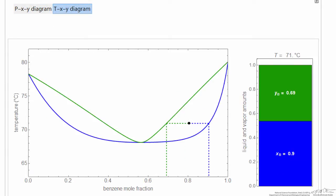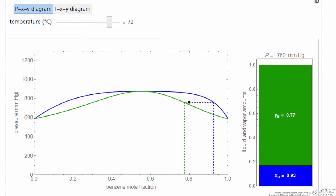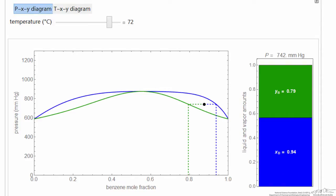So notice if we have a minimum temperature azeotrope, then we have a maximum pressure azeotrope. Again we can move the point around with the mouse, and we can change the relative amounts of liquid and vapor.